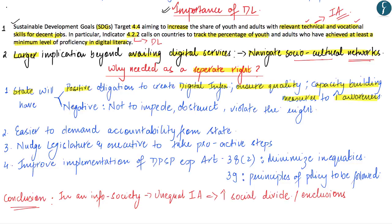On the other hand, this right will also create a negative obligation on the state — an obligation to not do anything which will impede, obstruct, or violate this right. This will make the state more responsible to take better steps to ensure digital literacy penetrates to the last level. Secondly, recognizing it as a separate right will make it easier for people to demand accountability from the state, as people can directly approach the court of law. Thirdly, it will nudge the legislature and executive to take proactive steps in the direction of improving digital literacy.